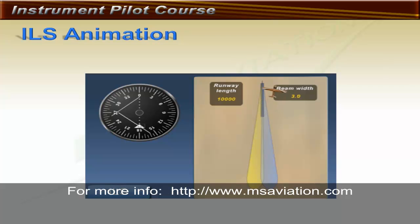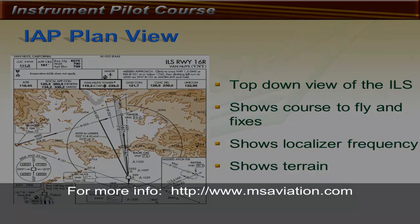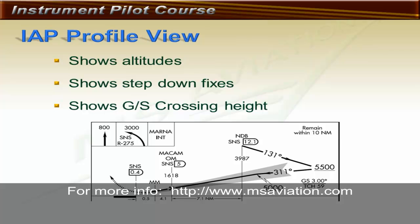The plan view of an instrument approach procedure shows the course to be flown, fixes along the ILS, the localizer frequency, and a depiction of terrain with obstructions. The profile view shows altitudes to fly when established on a segment of the approach, as well as any step-down fixes along the way.